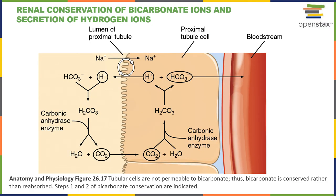The urinary system provides a long-term mechanism to maintain pH homeostasis by regulating the excretion of hydrogen ions coupled to the conservation of bicarbonate ions, in order to respond to chronic long-term acidosis. Conversely, in response to alkalosis, the urinary system can stimulate the excretion of bicarbonate ions. So acidosis will stimulate an increased excretion of hydrogen ions and conservation of bicarbonate ions.